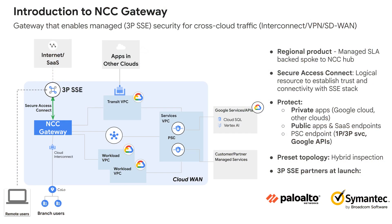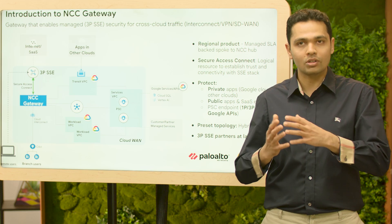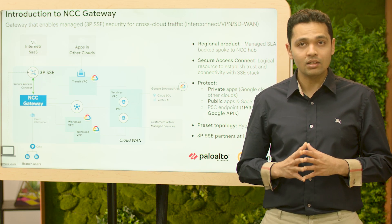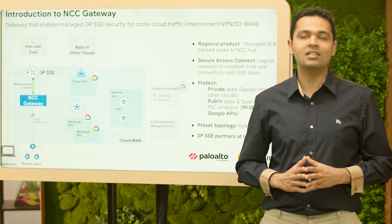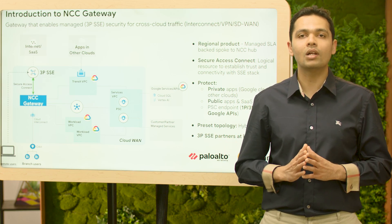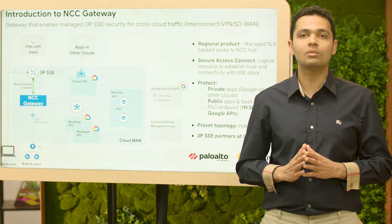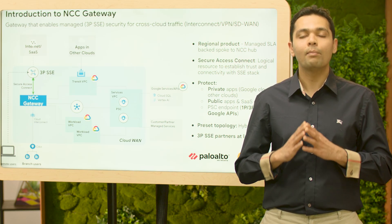NCC Gateway is a regional product backed with an SLA for uptime. It is a managed spoke of Network Connectivity Center (NCC) where customers can directly terminate their interconnect attachment from on-prem or cross-cloud networks. For managed third-party SSE insertion, customers need to configure Secure Access Connect and attach it to NCC Gateway. Secure Access Connect is a logical resource that establishes trust and instantiates the underlying connectivity with the SSE stack. Customers also need to enable hybrid inspection, a new type of preset topology on Network Connectivity Center. This setup enables SSE security for private applications, public applications, and Google APIs. At launch, customers can onboard third-party SSE solutions from Palo Alto Networks and Broadcom.